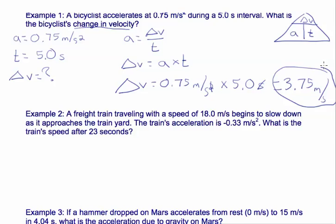Let's look at example two. It says a freight train traveling with a speed of 18 meters per second begins to slow down as it approaches the train yard. The train's acceleration is negative 0.33 meters per second squared. What is the train's speed after 23 seconds?